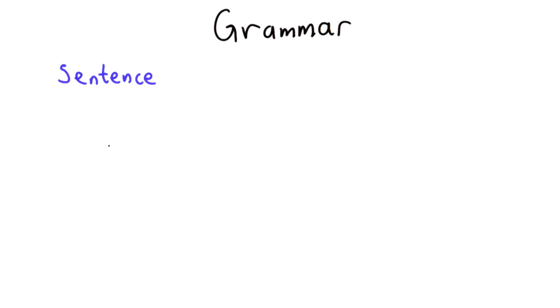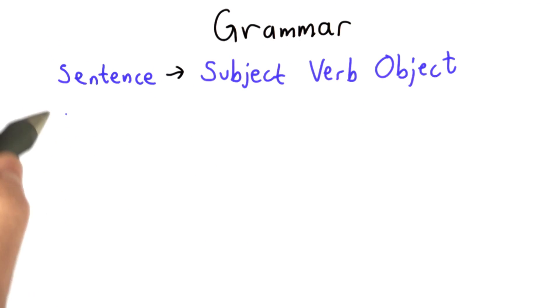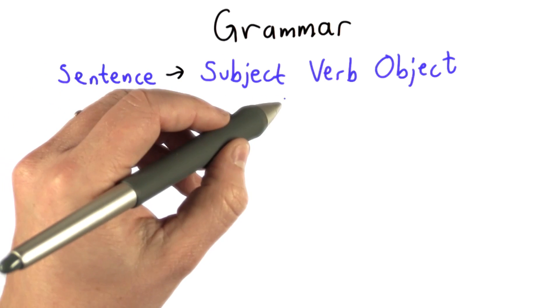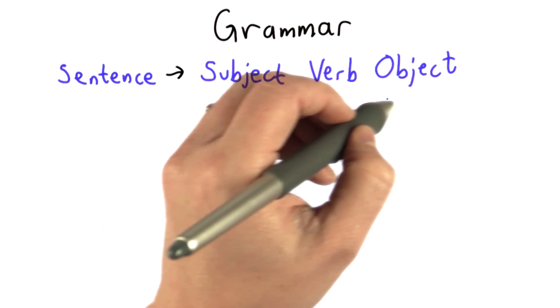Those of you who are native English speakers might have learned rules like this in what was once called grammar school. Those of you who learned English as a second language probably learned rules like this when you were learning English. English has a rule that says you can make a sentence by combining a subject with a verb followed by an object.